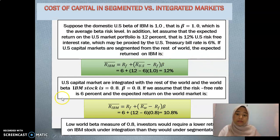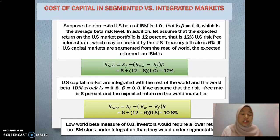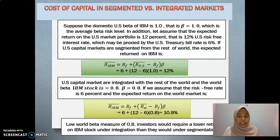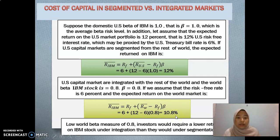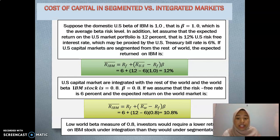The second example is for the integrated market. It is similar to the segmented example but we change the beta to 0.8. So the expected return for the integrated market is 10.8%. This ensures that the cost of capital will be decreased when we use the integrated market, because the integrated market has a lot of foreign investors.